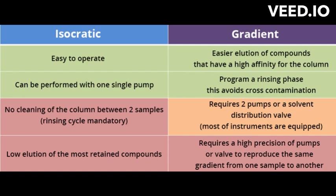Isocratic HPLC uses a constant composition of the mobile phase throughout the entire separation process. The same solvent or mixture of solvents is used to elute the sample components, and the solvent composition does not change. This method is useful for the separation of similar compounds with similar polarity and retention times. The separation is based on the interaction of the sample with the stationary phase, and the separation efficiency is limited by the selectivity of the stationary phase.